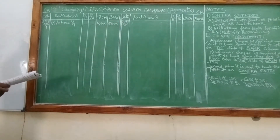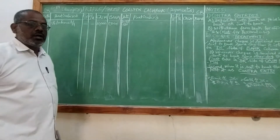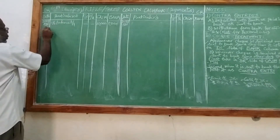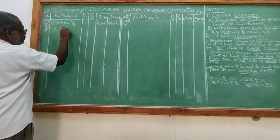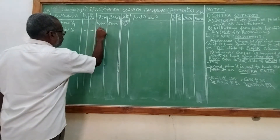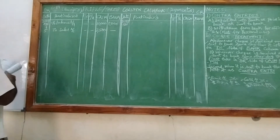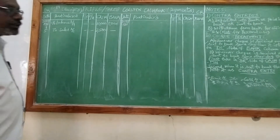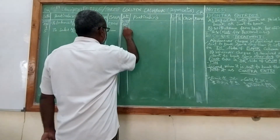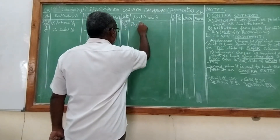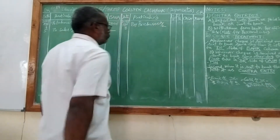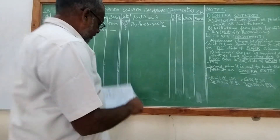Number 5 is sales — that means we are receiving cash and we are selling goods, so all the receipts should be taken on the debit side. Sales is 2,500. Number 8 is purchases — we are purchasing goods and we are making payments, so it is a credit side entry. The purchase amount is 1,800 in cash.